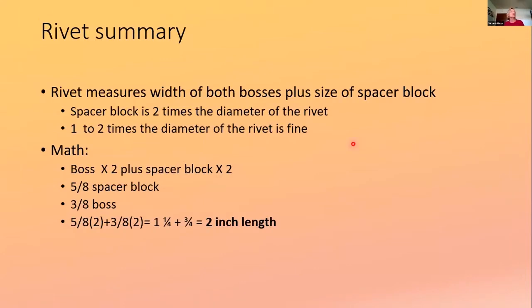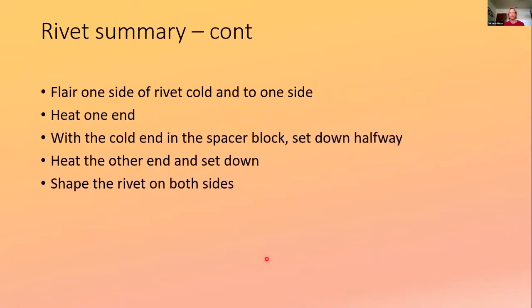The diameter of the rivet shouldn't be more than two times the length for that side. So if you have the spacer block and you know your boss is three eighths, you take both of those times two, that gets you to a two inch length. The smallest would just be the diameter. The biggest would be two times the diameter. And you flare the one side. So this will just summarize what we just reviewed in that video.